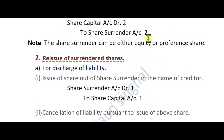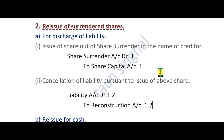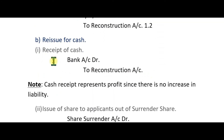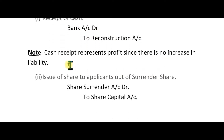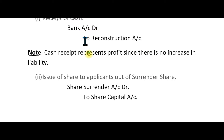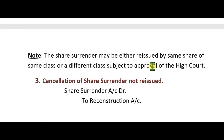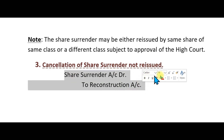For the remaining surrendered shares — say 80,000 — if not used, we transfer them to the Reconstruction Account. If fresh shares are issued, the entry is: Bank Account debit to Reconstruction Account. The Share Surrender Account balance is also reused, and its final balance is transferred to the Reconstruction Account.